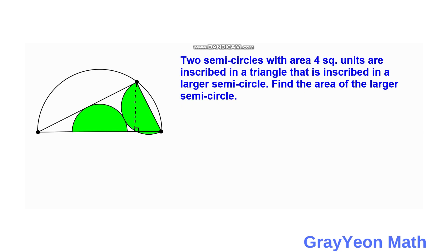And same with this larger triangle. It is a right triangle because of Thales theorem because it is inscribed in this larger semi-circle.